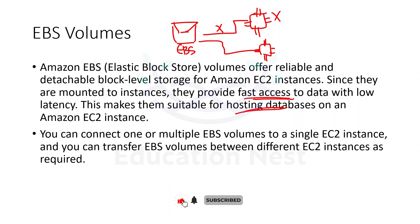There are different types of EC2 instances and we select appropriate types according to different workloads. We can connect one or multiple EBS volumes to a single EC2 instance and transfer an EBS volume between different EC2 instances. Even if the instance is not failing, we can transfer an EBS volume to another EC2 by detaching it and reattaching it.